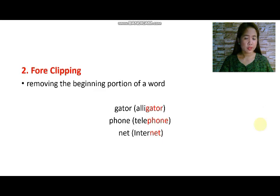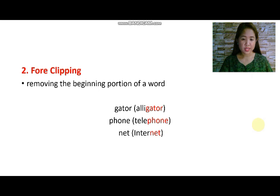For the second type of clipping, we have fore-clipping. It is the removing of the beginning portion of a word. For example, instead of saying alligator, you can just say 'gator'.